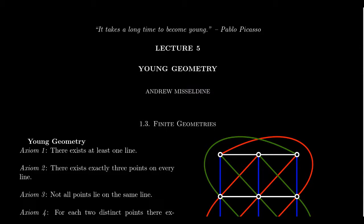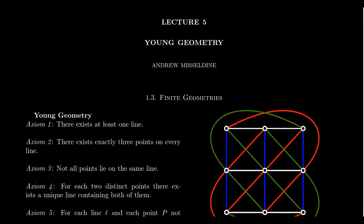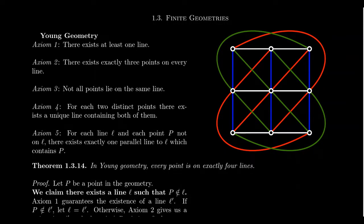To motivate Young's geometry, I want to connect it to the Fano geometry we talked about in Lecture 4. Let me put a diagram of Young's geometry on the screen, along with the axioms. I want to remind the viewer that axiom 5 of Fano geometry is a statement about parallel lines — that they don't exist. Axiom 5 of Fano geometry, as we stated, was: all lines intersect. So parallel lines don't exist in Fano geometry.